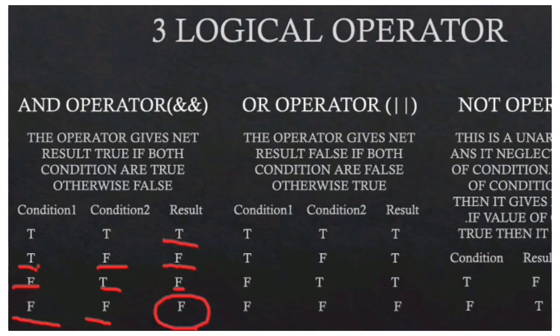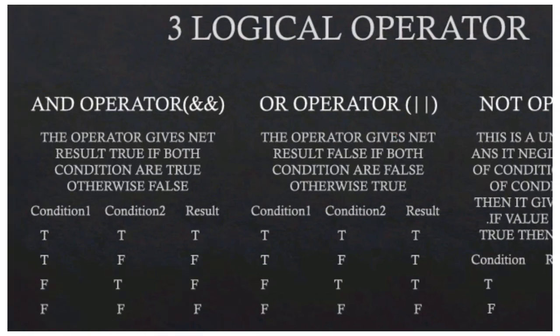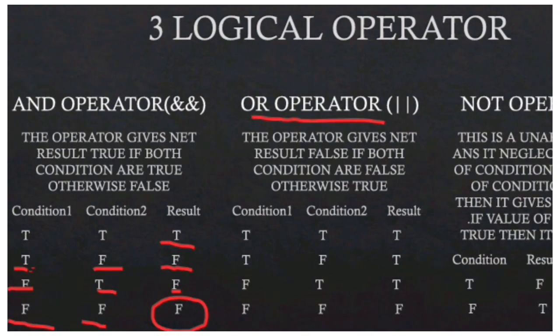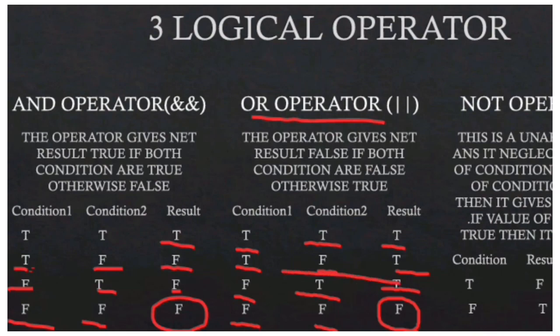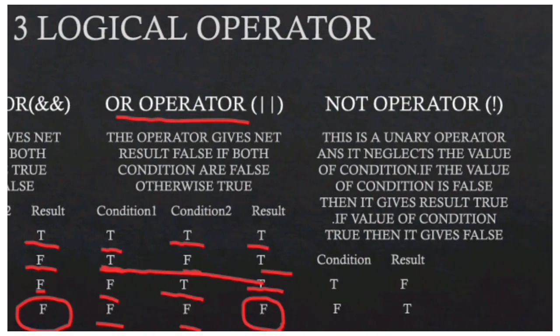The OR operator gives a net result of false only if both conditions are false, otherwise it gives true. If both conditions are false then the result is false. If both statements are true then the result is true.